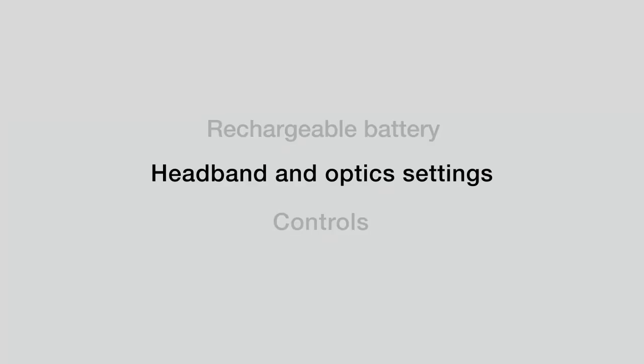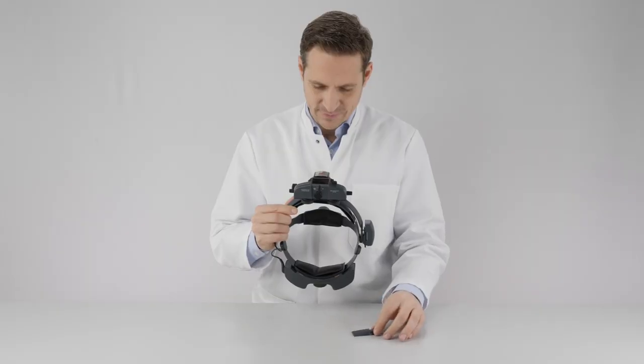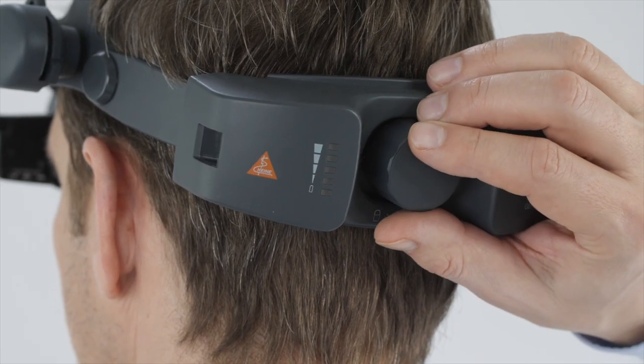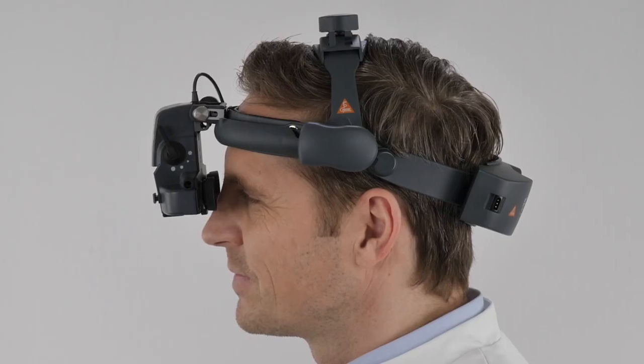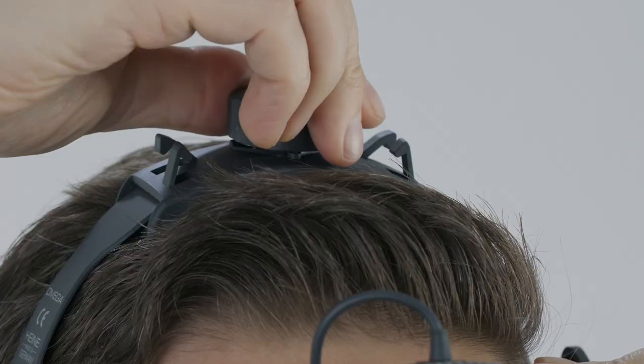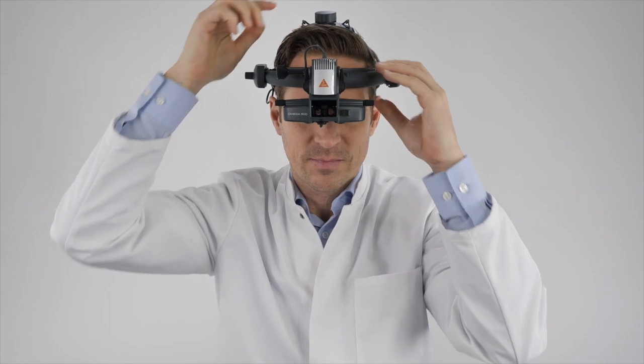The next chapter: headband and optics settings. First, remove the protective cap. There are two large knobs on the headband. With the rear knob, you can set the head's circumference. The battery should be placed slightly downwards. With the upper knob, the height can be adjusted. The headband should sit firmly but comfortably.